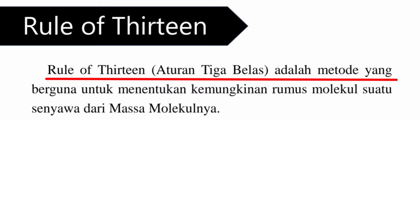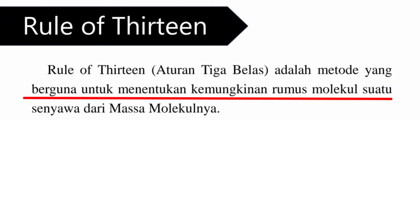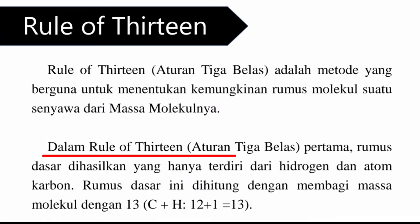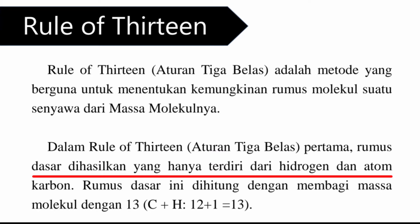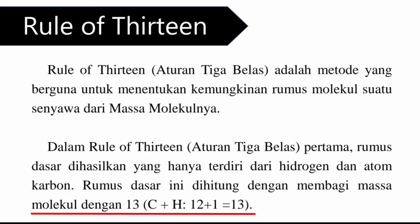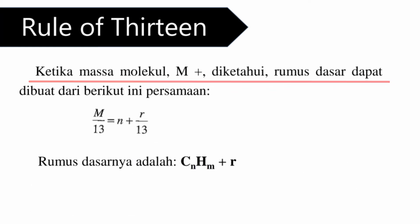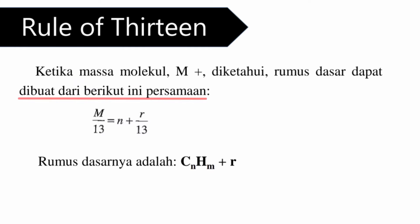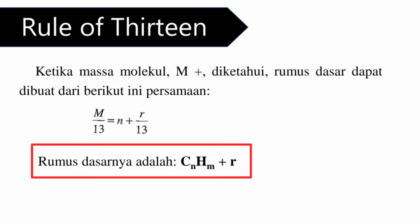Rules of 13 atau aturan 13 adalah metode yang berguna untuk menentukan kemungkinan rumus molekul suatu senyawa dari massa molekulnya. Dalam rule of 13, pertama, rumus dasar dihasilkan yang hanya terdiri dari hidrogen dan atom karbon. Rumus dasar ini dihitung dengan membagi massa molekul dengan angka 13, karena 1 karbon ditambah 1 hidrogen sama dengan 12 ditambah 1 sama dengan 13. Persamaannya: M dibagi 13 sama dengan N ditambah R dibagi 13, dan rumus dasarnya adalah C_N H_(N+R).